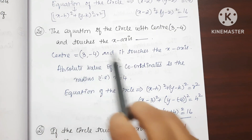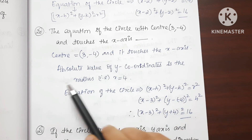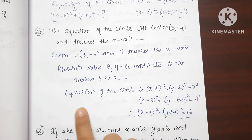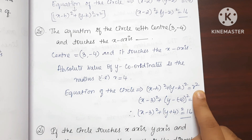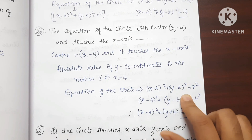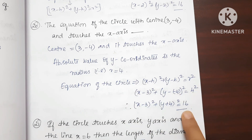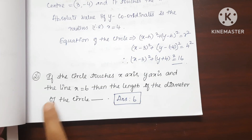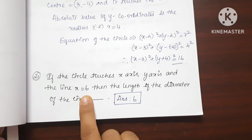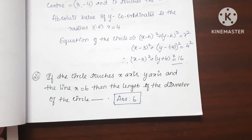Question 20: The equation of a circle with center (3,-4) touching the axis. The absolute value of the y-coordinate gives radius r=4. Substituting into (x-h)²+(y-k)²=r², the answer is 16. Question 21: If a circle touches the x-axis, y-axis, and the line x=6, then the length of the diameter of the circle is 6.